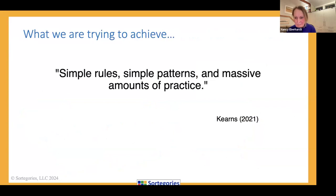So what are we trying to achieve according to Kern? Simple rules, simple patterns, and massive amounts of practice. It's the practice that really is getting missed. And it's the practice that will take kids from slow-labored reading that might sound like a robot to fluent readers.